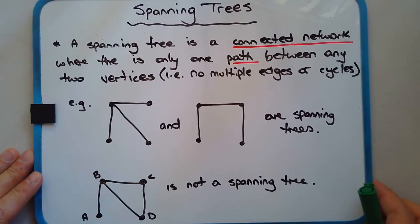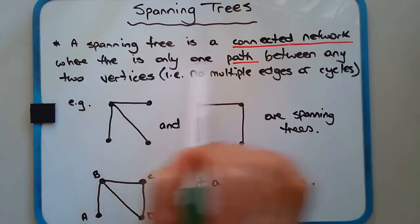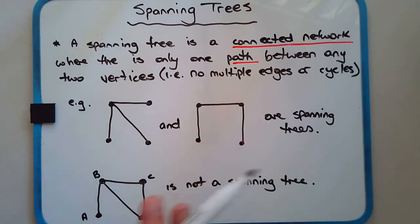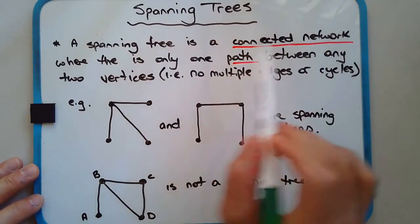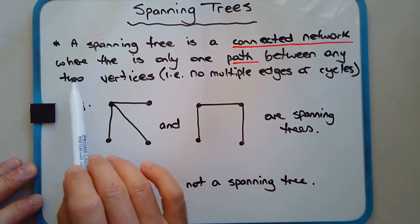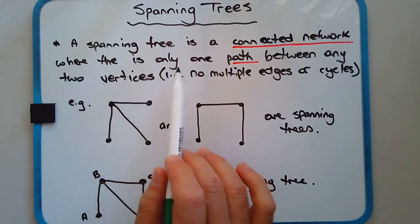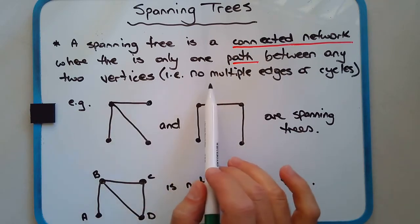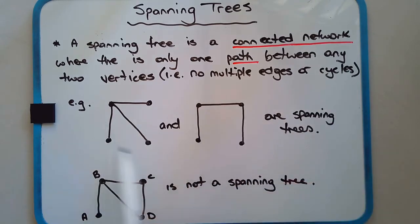Now that we know what a tree is, a spanning tree is a connected network. We can't have a situation where there are two sub-networks with a break between them and no way to get from one part to the other. It must be a connected network, and the same rule applies: there can only be paths — only one path between any two vertices, no multiple edges, and no cycles.